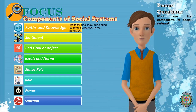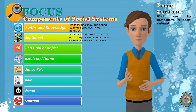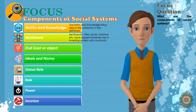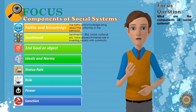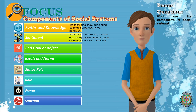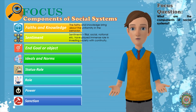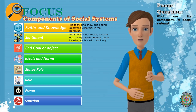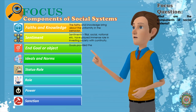2. Sentiment: Man does not live by reason alone. Sentiments — filial, social, notional, etc. — have played an immense role in investing society with continuity. It is directly linked with the culture of the people. 3. End Goal or Object: Man is born social and dependent. He has to meet his requirements and fulfill his obligations. Man and society exist between needs and satisfactions, end and goal. These determine the nature of the social system. They provide the pathway of progress and the receding horizons.